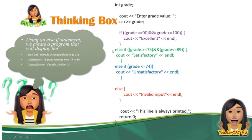We have here now the second condition para masatisfy itong problem. Else if, grade is greater than or equal to 75 and grade is lesser than or equal to 89 — ang idi-display naman niya ay 'satisfactory.' Pag ang grade naman is lesser than or equal to 74, idi-display niya ang 'unsatisfactory.' After that, pag lahat ng given condition dito is nag-false, ang gagawin automatic is si else. Laging niyong tatandaan: laging merong else pag gumagamit kayo ng else if. Cout: 'this line is always printed.' Ito yung mga statement na nasa labas na ng else if ninyo. This is the else-if statement.